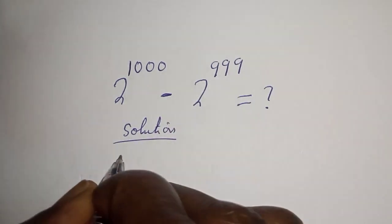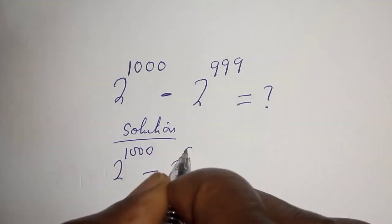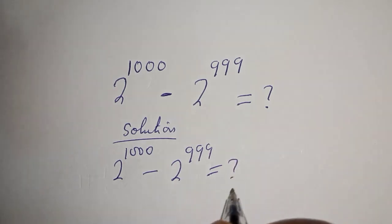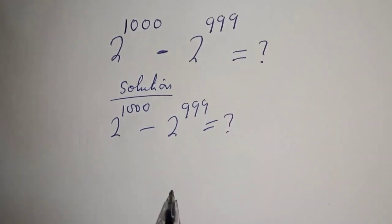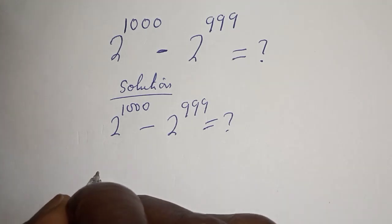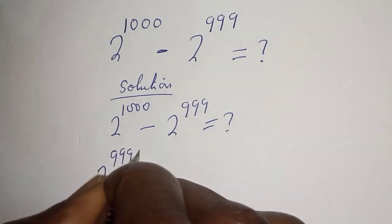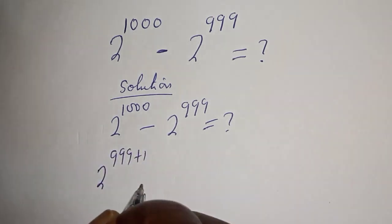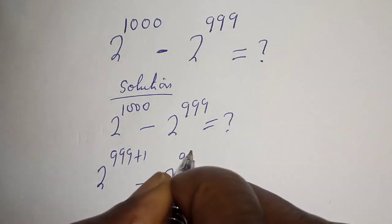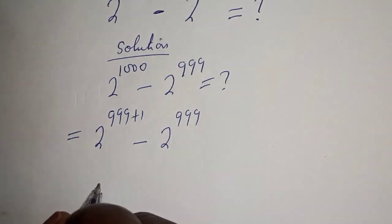Solution: 2 raised to power 1000 minus 2 raised to power 999. We rewrite 2 raised to power 1000 as 2 raised to power 999 plus 1, minus 2 raised to power 999.